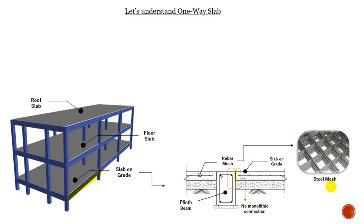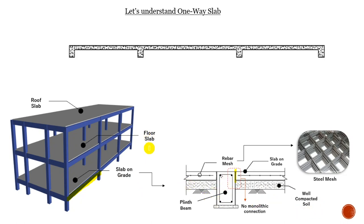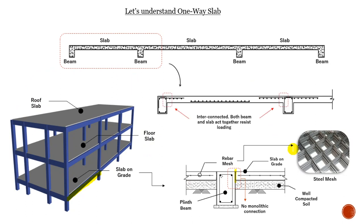The rebar mesh comes ready from the factory — it's already welded; what you need to do is just lay it down and pour the concrete. There's no complexity in designing the slab on grid — it's very simple, and it is resting on a well-compacted soil, not supported by the beams. The floor slab and the roof slab are different because they are hanging — taken by the beams. Inside you see a monolithic connection; the rebar integrates into the beams' rebar, forming just one continuity.